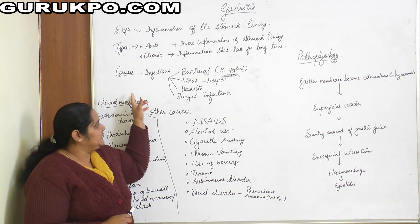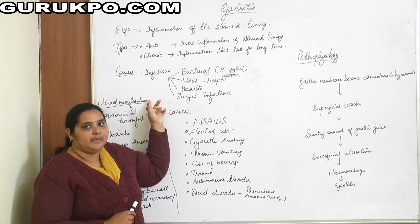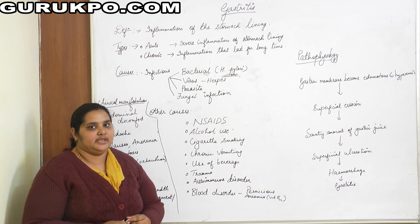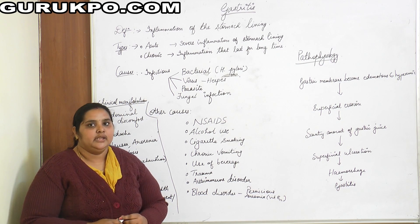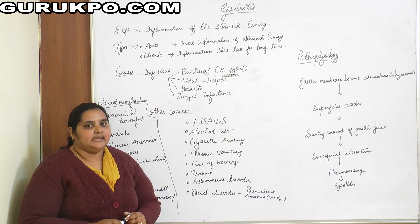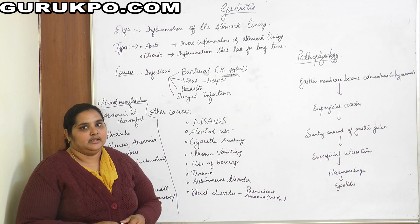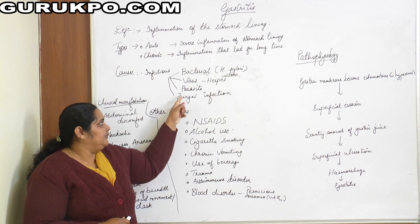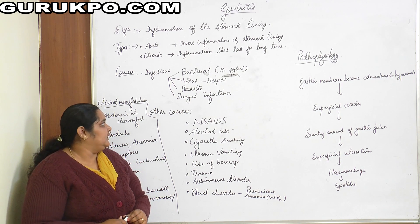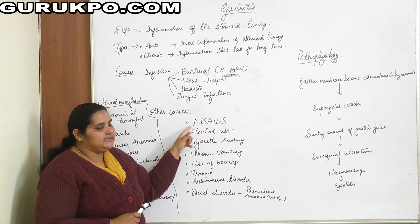Next are the causes, which include infectious causes and other causes. Under infectious causes, the bacteria that causes gastritis is Helicobacter pylori — this bacteria enters the stomach and disturbs the mucosal lining. Other infectious agents include herpes virus, parasites, which can also damage the mucosal lining, and fungal infections.